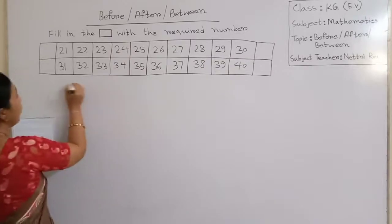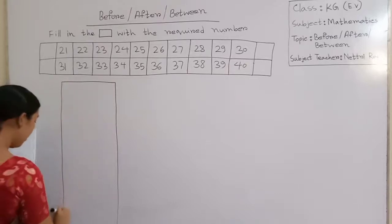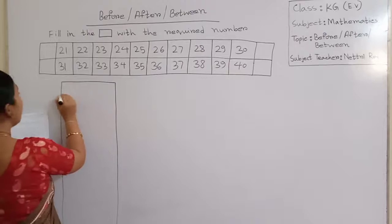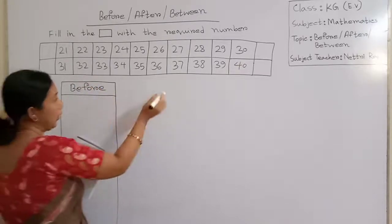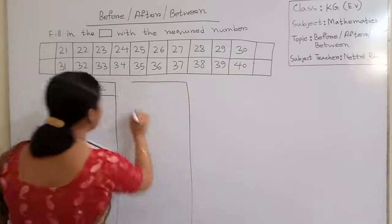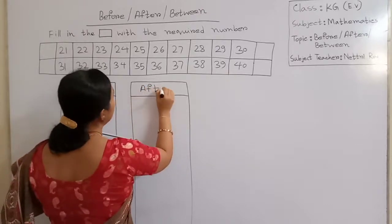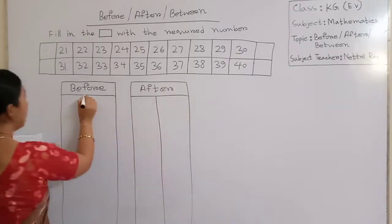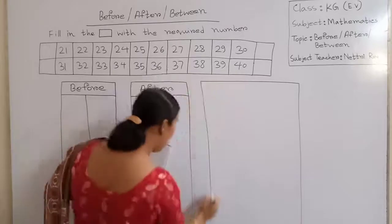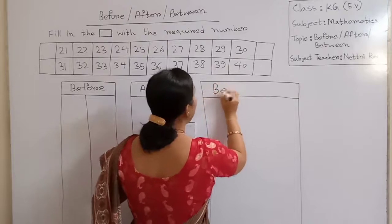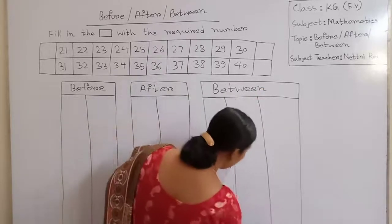Before, before, after, after, between - B, E, T, W, double E, N - between.